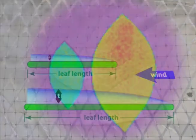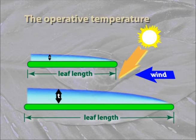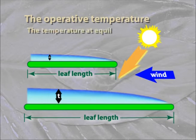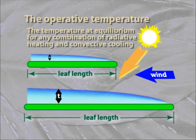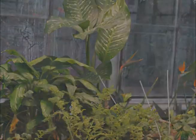This equilibrium temperature has a specific name — it is called the operative temperature, so-called because it's the effective environmental temperature at which the leaf must operate. In any situation of radiation and convection, larger leaves will have higher operative temperatures than smaller leaves will. So far, we've only worked with model leaves. How about real leaves? Will they bear out this prediction? Let's find out.